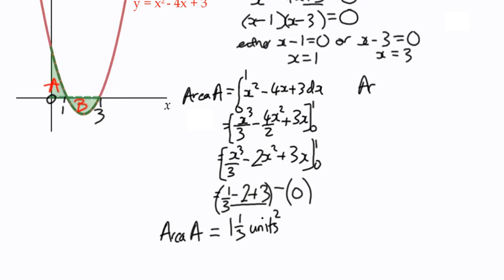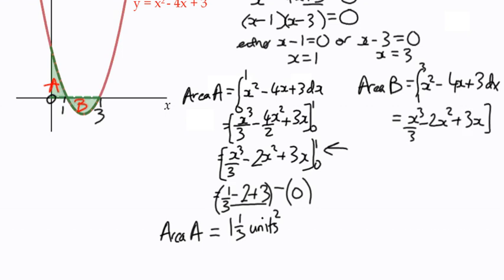We can do the same for Area B. We know it's the integral this time from 1 to 3 of x squared minus 4x plus 3 dx. Good news is we've already got the answer, which is over here.